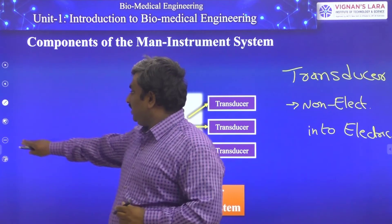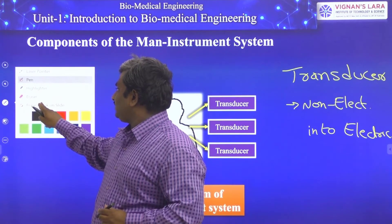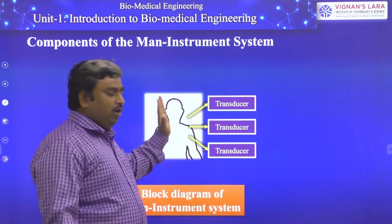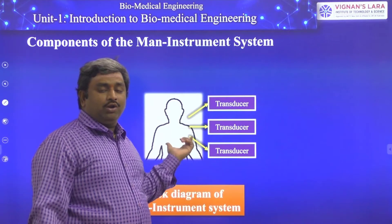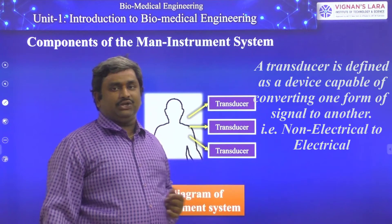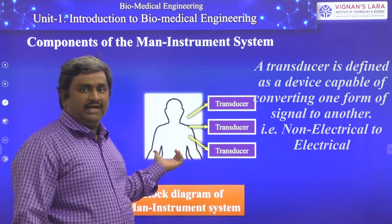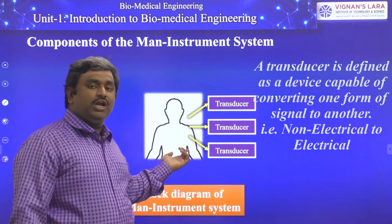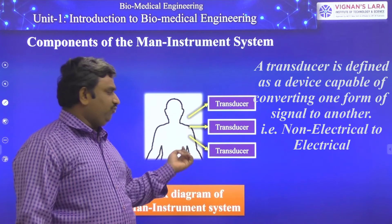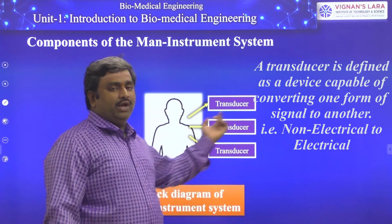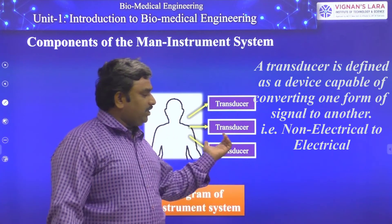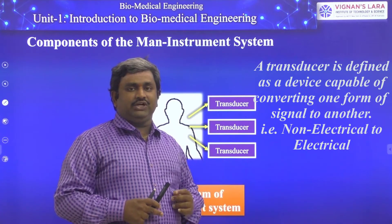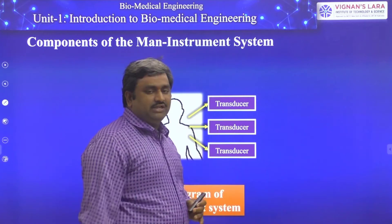The responsibility of the transducer is to convert physiological information, or non-electrical information, into electrical signals. Whatever information the human body has — non-electrical or physiological — the transducer converts it into electrical form. At the output of the transducer we have human body signals with electrical potentials, so electrical signals are now available.